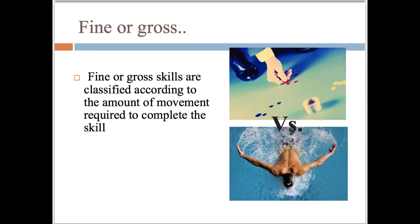Fine or gross skills are classified according to the amount of movement required to complete the skill. A fine motor skill typically involves performing small and precise movements using small muscles in the body, such as tiddlywinks. A gross motor skill typically involves performing large movements using the major muscle groups in the body, such as swimming.